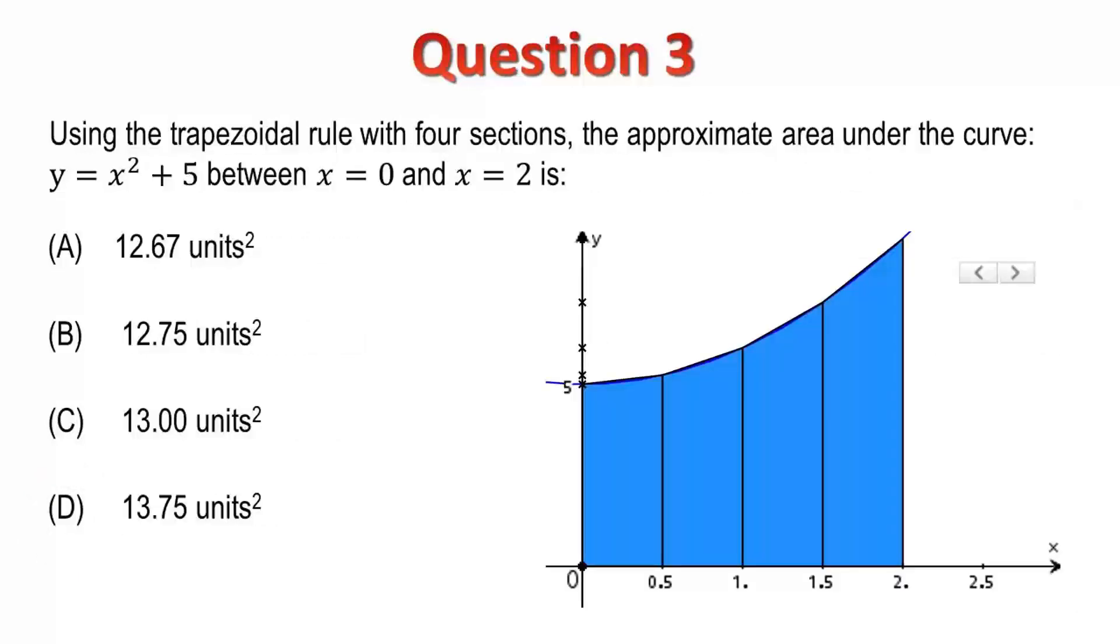Question 3. Using the trapezoidal rule with four sections, determine the approximate area under the curve y equals x squared plus 5 between x equals 0 and x equals 2. The calculator does have the ability to determine a definite integral, but the question specifically asks for the trapezoidal rule. We can see by the diagram that the two areas, or the two results, would be very similar. The multiple choice options validate this. So, let's try and understand the trapezoidal rule.